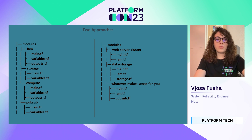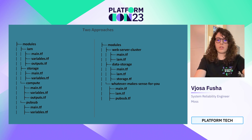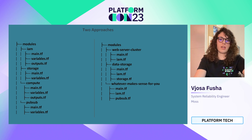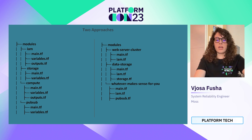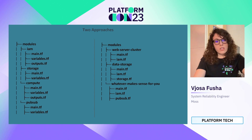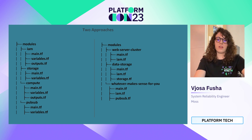The other approach is solution-specific grouping. It makes sense to define solution-specific resources and configuration in a module. For example, we have a web server cluster and we configure everything related to that there — IAM permissions, network, data storage, whatever really makes sense — merging all the resources needed for that specific solution. In our team, we started moving from the first approach to the second, because it made sense to have clear code when looking at or creating new features.